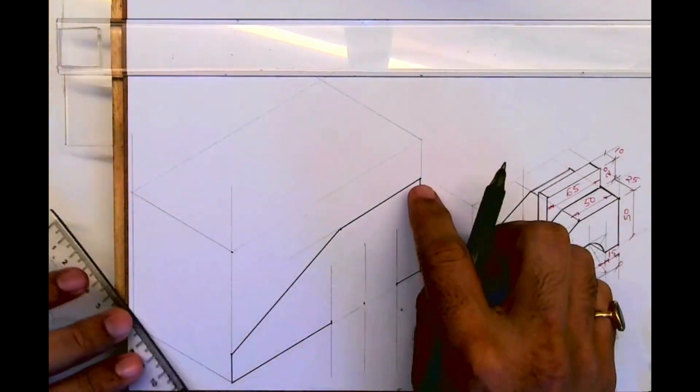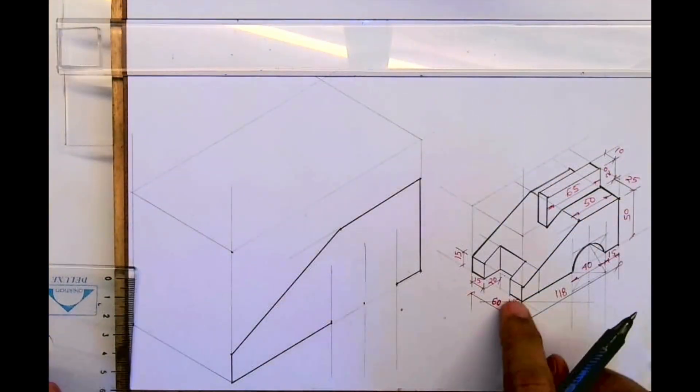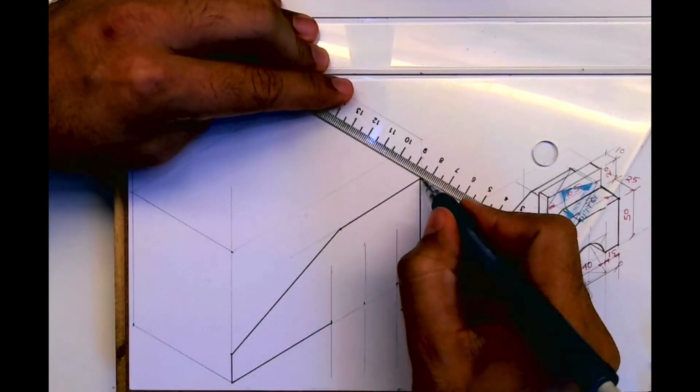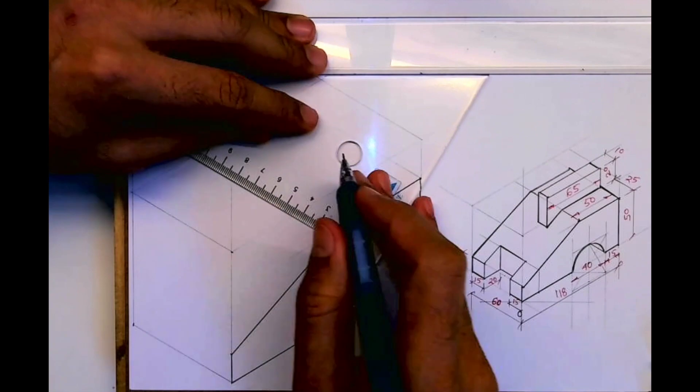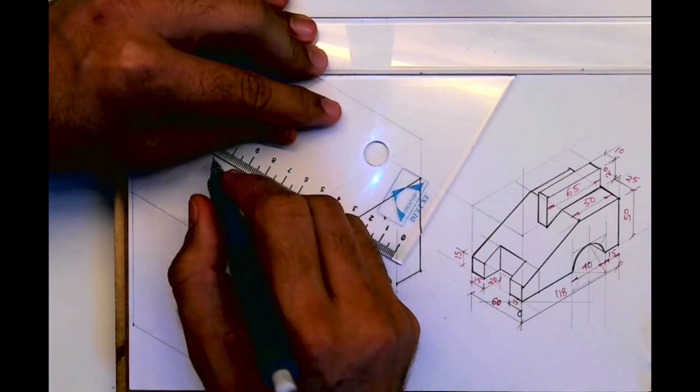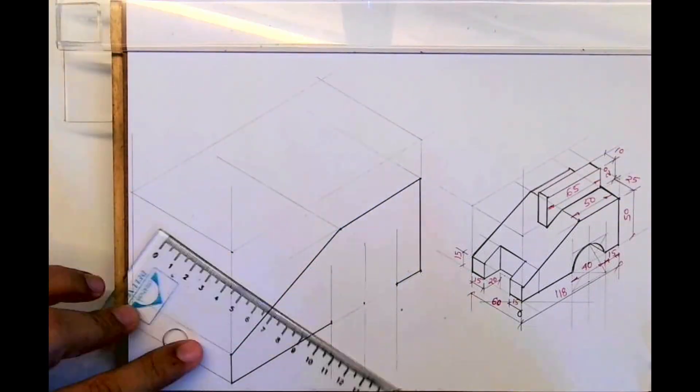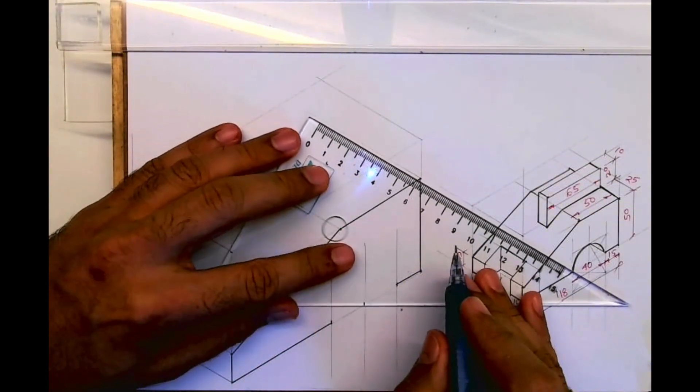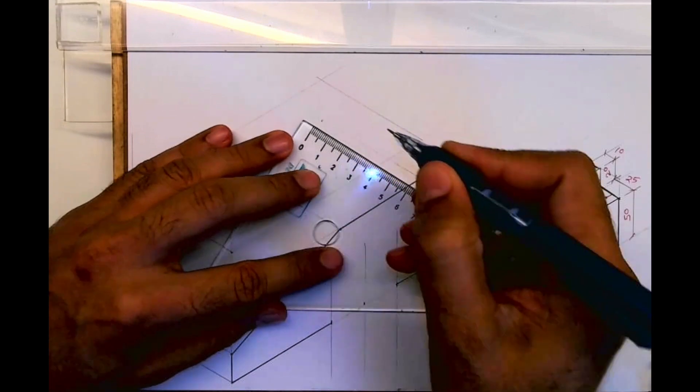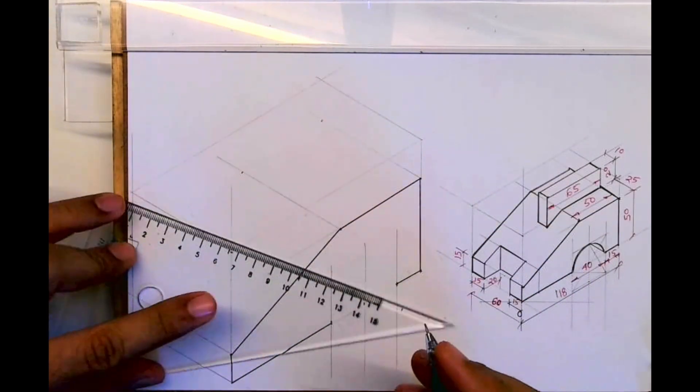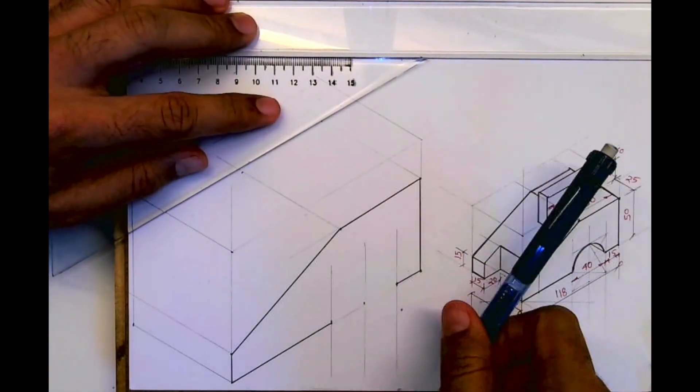So we are done with this part. Now the same part is behind. How much is it behind? 60. So we'll take all the points behind by 60. You have to go behind by 60, and then we join this.